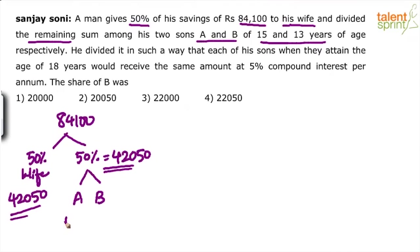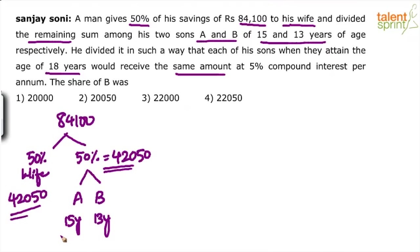Remember, A is 15 years old and B is 13 years old. The amount has been divided in such a way that when both these sons become 18 years old, they would receive the same amount. He has currently divided 42,050 in such a way that when both the sons become 18 years old, they will get the same amount from the bank. He has deposited A's part in the bank and B's part also in the bank.